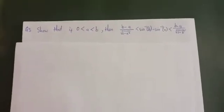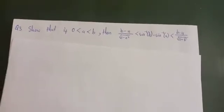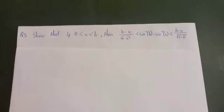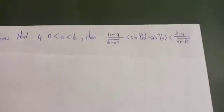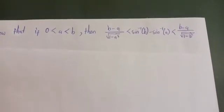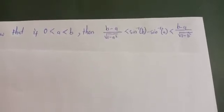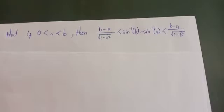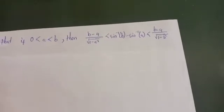Today we are looking at this mathematics problem. We need to show that if 0 < a < b, then (b−a)/√(1−a²) < arcsin(b) − arcsin(a) < (b−a)/√(1−b²). So we want to show this.